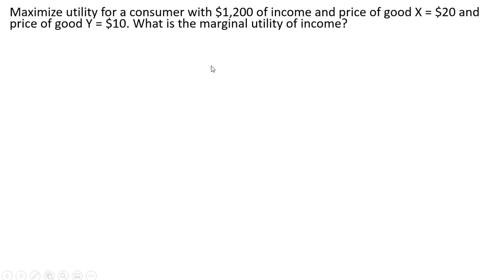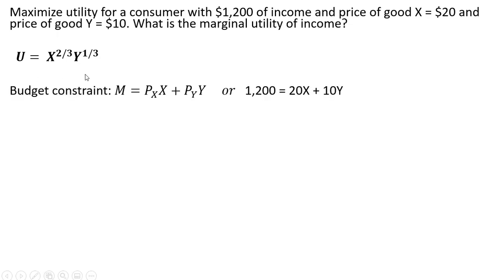So let's start with the consumer. The consumer is going to maximize utility. The consumer has $1,200 of income, the price of good X is $20 each, and the price of good Y is $10 each. What is the marginal utility of income? Here's the consumer's Cobb-Douglas utility function, and the budget constraint in general is money income equals the price of good X times units of good X plus price of good Y times units of good Y. Substituting our values from the question into the formula, here is the consumer's budget constraint.